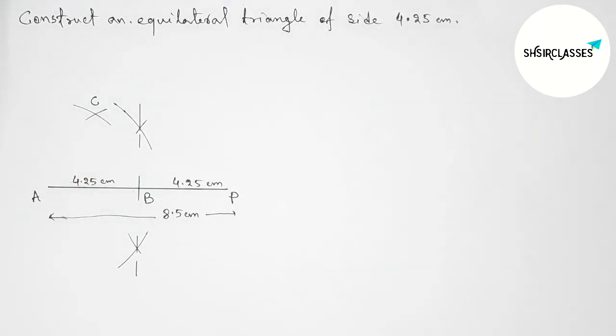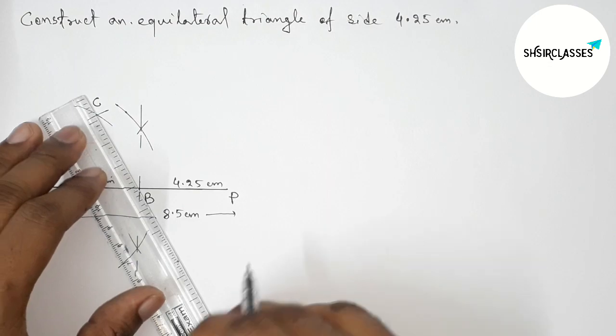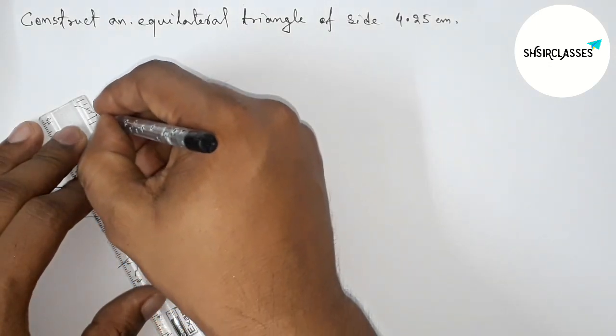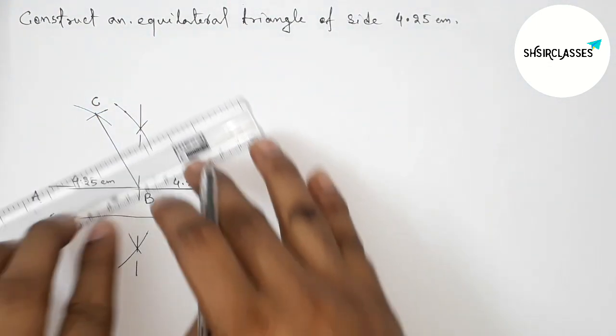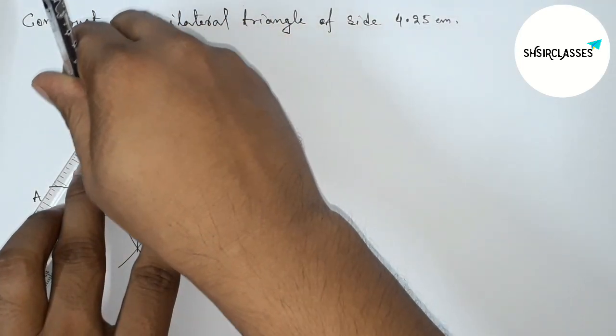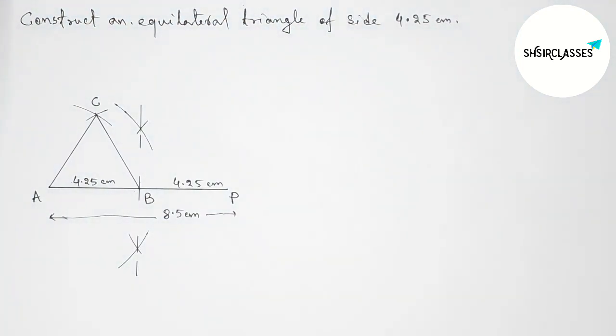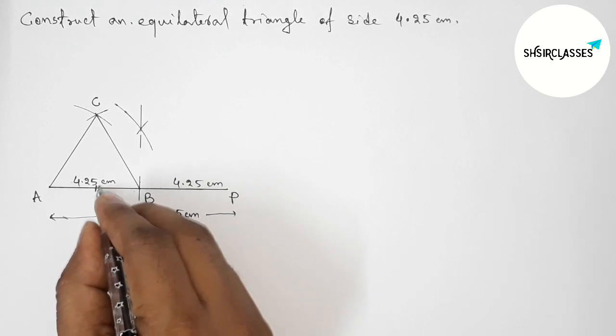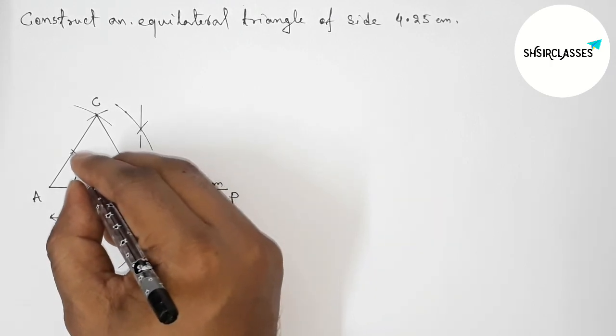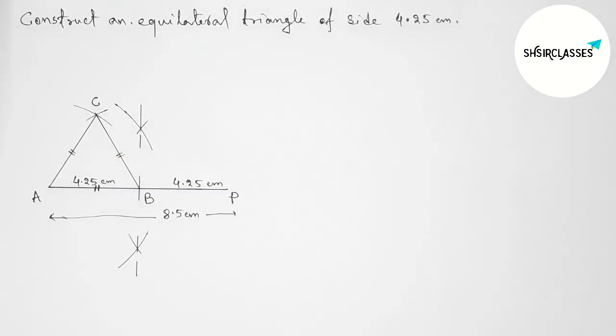First join the side BC, then join the side AC to get the equilateral triangle. We got the triangle. Here we know that all sides of an equilateral triangle are equal.